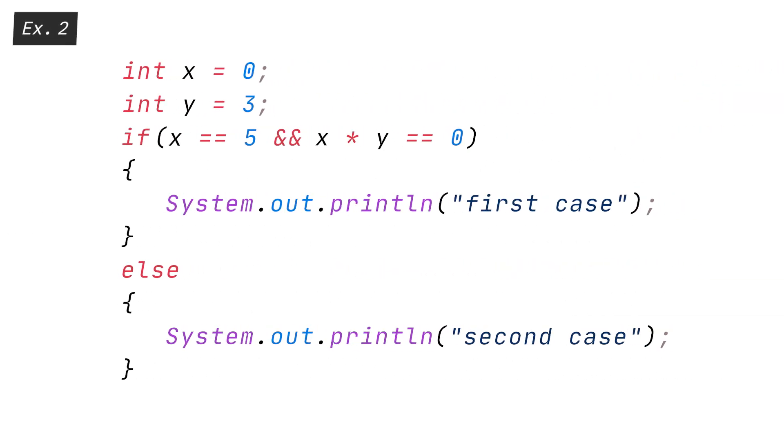Let's take a look at another example. X equals 0, Y equals 3, IF X equals equals 5, AND X times Y equals equals 0, PRINT first case, ELSE PRINT second case.